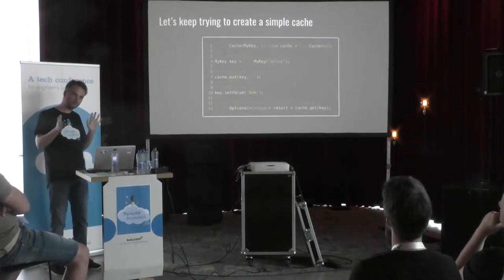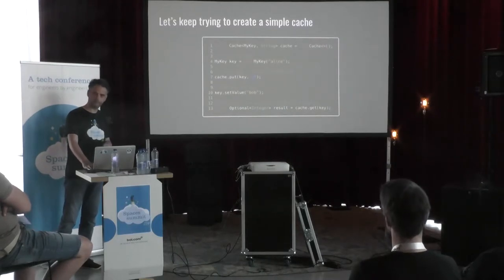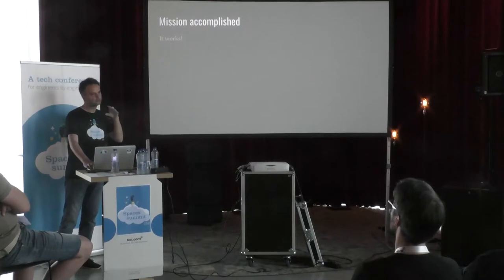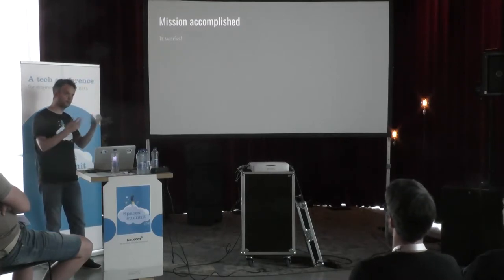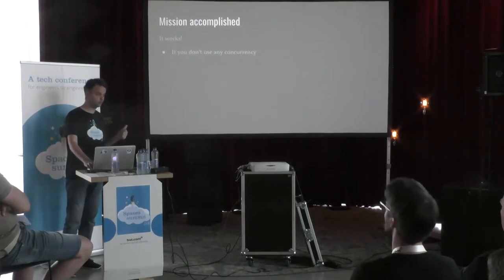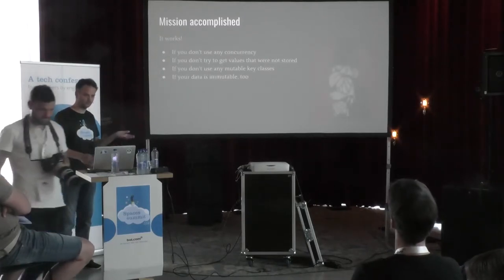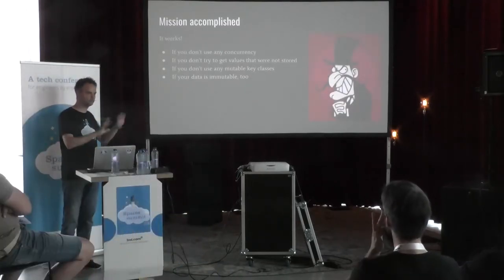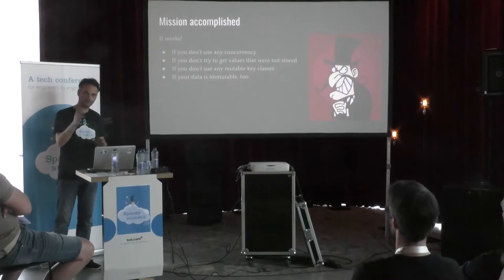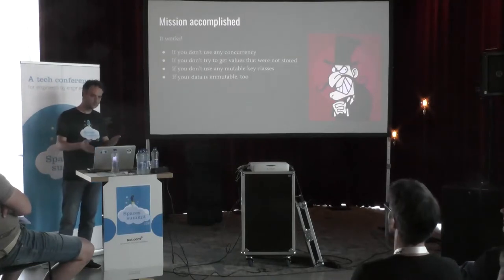The hash code might have been cached or other tricks might cause a wrong result. I just want to explain: it's very easy to write something that looks simple on the outside. The cache I showed you looks very simple. But we made a cache that only works if you don't use any concurrency, if you don't try to get values that were not stored, if you don't use any mutable key classes, and if your data is immutable too. It looks like a very simple, nice cache class, but it actually breaks in all sorts of ways. And you cannot see that on the outside — there are hidden assumptions, and bugs, that you don't see.